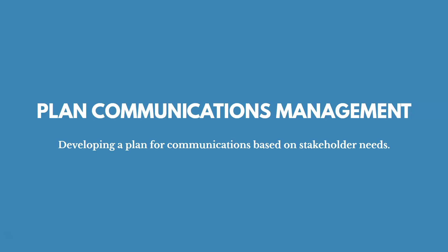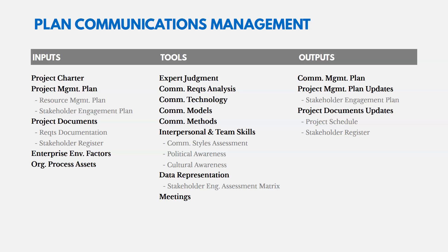Let's talk about the inputs and outputs for Plan Communications Management — developing a plan for communications based on stakeholder needs. The inputs include your project charter and your stakeholder register listed in the project documents. Those include all your documented stakeholders, the people you want to talk to in order to figure out what they need and when. You also have enterprise environmental factors, organizational process assets, requirements documentation showing communication requirements, and your stakeholder engagement plan.